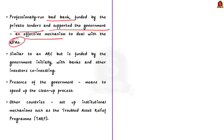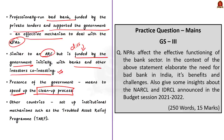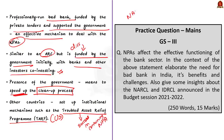A fully professionally run bad bank funded by private lenders and supported by the government can be an effective mechanism to deal with rising NPAs. The bad bank concept is similar to the Asset Reconstruction Company, but the difference is that it is funded by the government initially with banks and other investors co-investing in due course. Many other countries have set up such institutions — for example, in the United States there is the Troubled Asset Relief Program, which has been successful in dealing with financial stress.